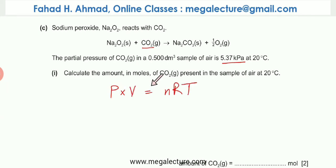I'm going to apply the ideal gas equation because the pressure of CO2 is given. That's 5.37 kilopascals, which is 5.37 × 10³ pascals. Remember, the pressure should be in pascals when you're using the ideal gas equation. The volume is 0.5 dm³, which should be 0.5 × 10⁻³ m³. This should be in pascals, this should be in meter cube. N is what we're supposed to find out, so N is unknown.